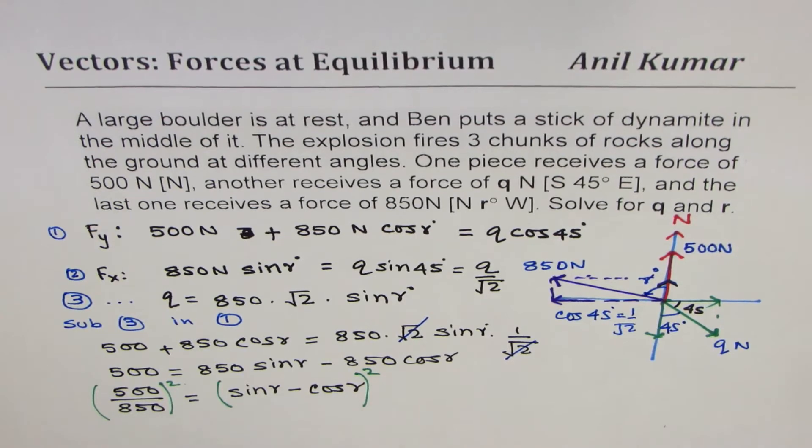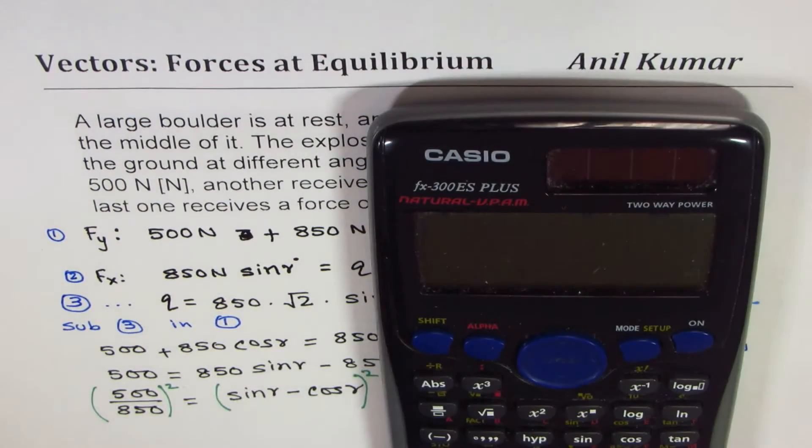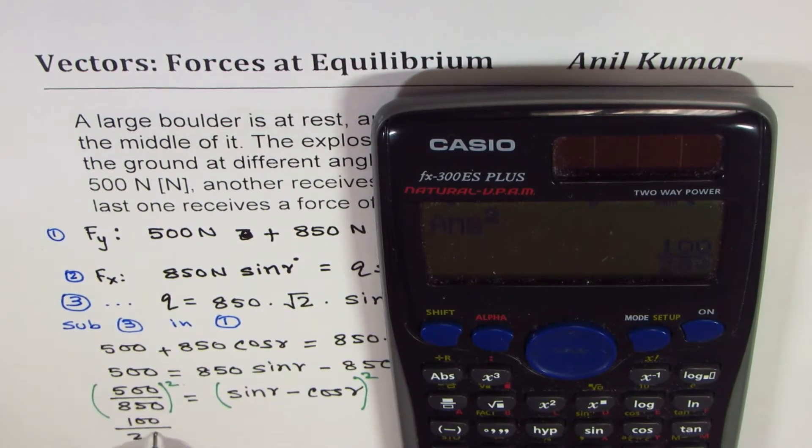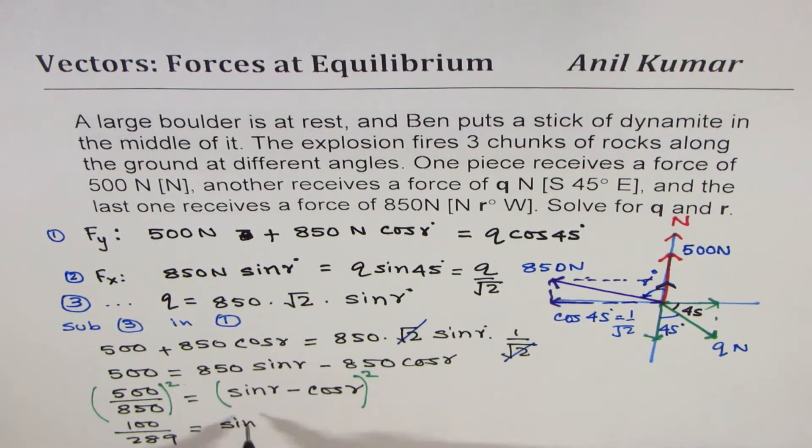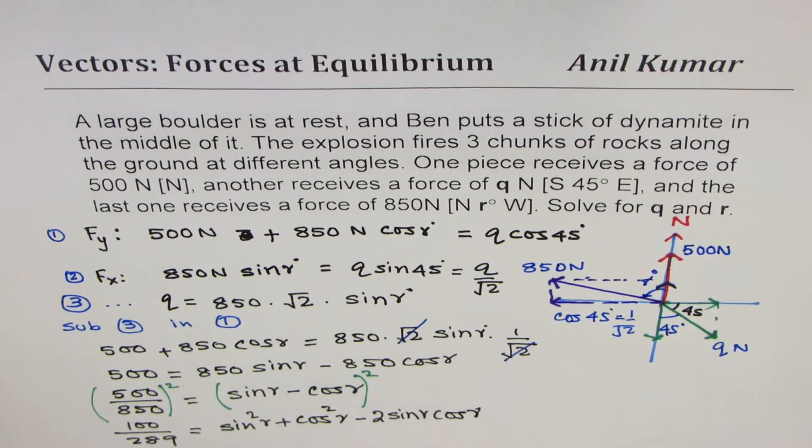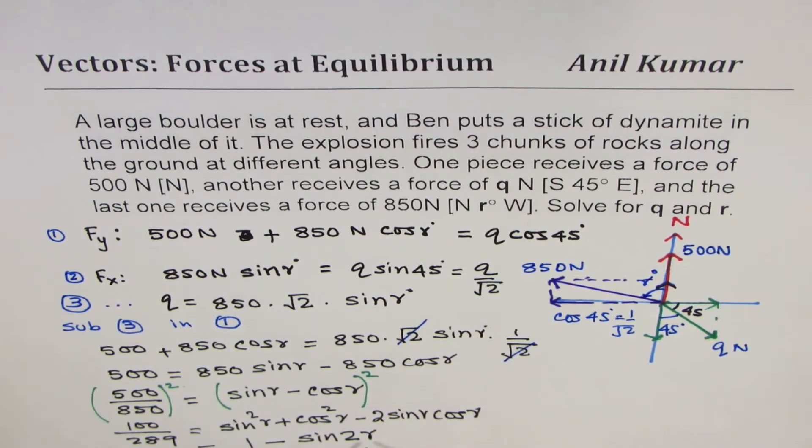So, what we will do at this stage is, we'll square both sides. When you square both sides, you also incorporate errors, remember that. Now, what is square of this? So, what we get here is, let us use calculator. We'll do 500 divided by 850 equals to, and then we'll square this number, and we get 100 over 289. This is after squaring.